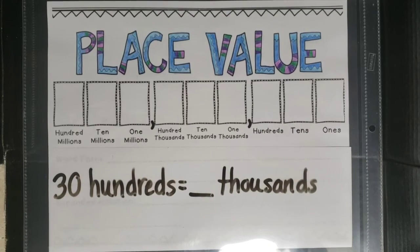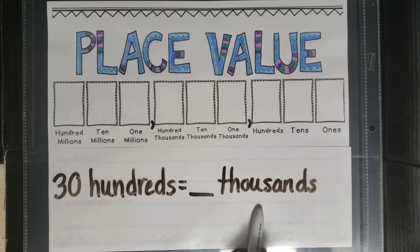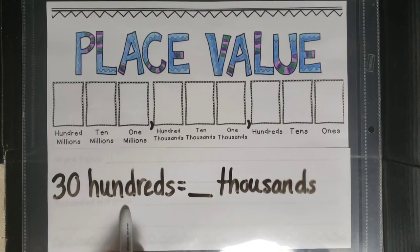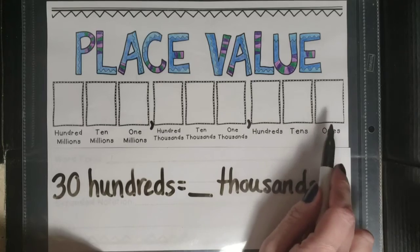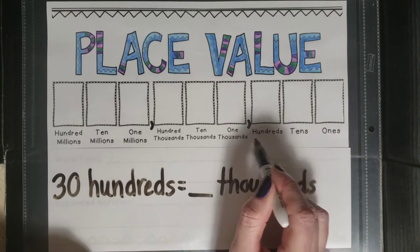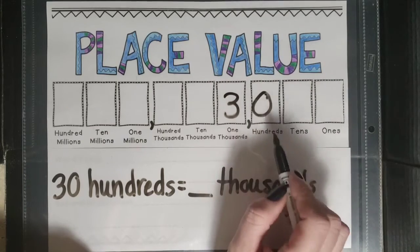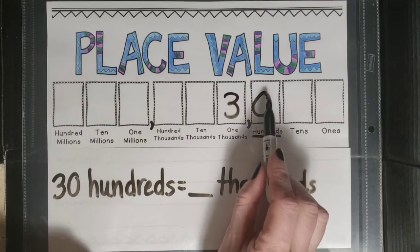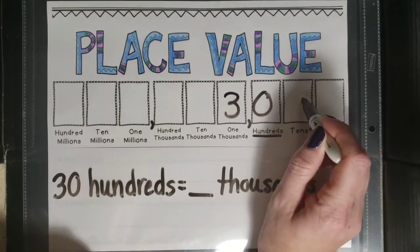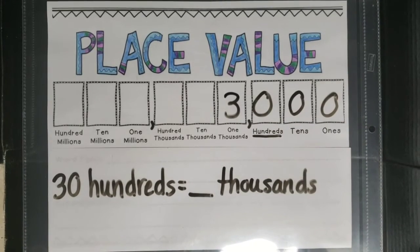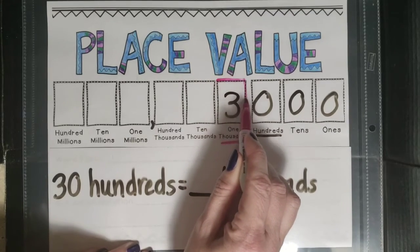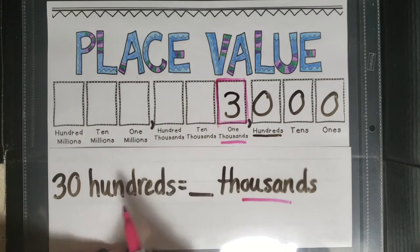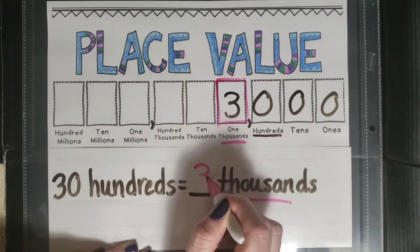We only have two more left. We have thirty hundreds equivalent to an unknown amount of thousands. Remember, we don't put the three in the hundreds place alone — that would give us three hundred. So thinking thirty hundreds: write thirty in the hundreds columns with two zeros as placeholders, and we're looking for our thousands. No more digits to the left, so thirty hundreds equals three thousands.